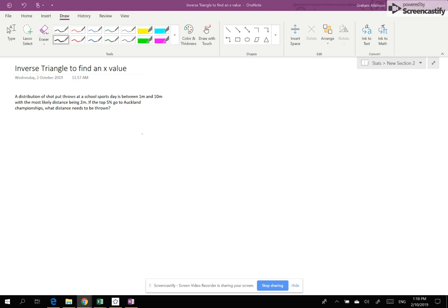Okay, so in this video we're going to be working out an x value for a triangle distribution. I know it's a triangle distribution because the question says the distribution of shot put throws are between 1 meter and 10 meters, with the most likely being 2 meters.